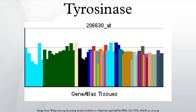Tyrosinases have been isolated and studied from a wide variety of plant, animal, and fungal species. Tyrosinases from different species are diverse in terms of their structural properties, tissue distribution, and cellular location. No common tyrosinase protein structure occurring across all species has been found.